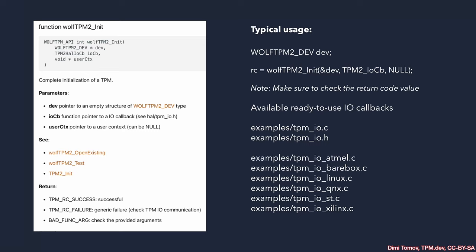To start working with the software stack we usually need to initialize it. In some cases this happens in two steps: first we initialize the stack, then we open the TPM device or the communication channel to the TPM. In WolfTPM we have a single API call to do both at the same time. The WolfTPM init usually takes care of the TPM startup. The important detail here is the IO callback — the init function takes a pointer to a function that implements this callback, and there are several examples. Linux is supported out of the box, QNX as well, bare metal, and so on.